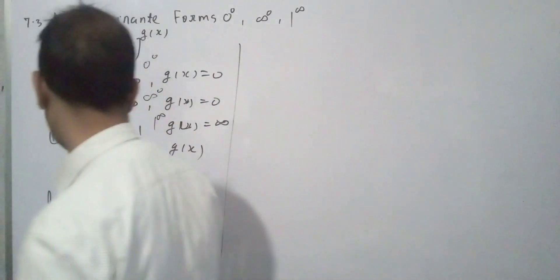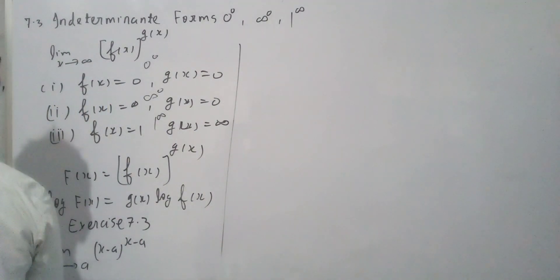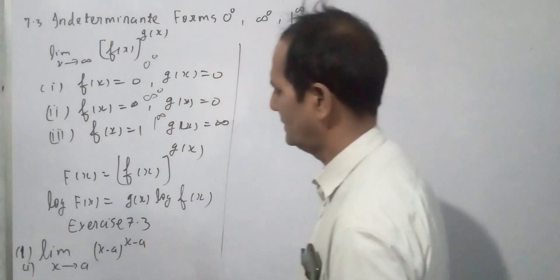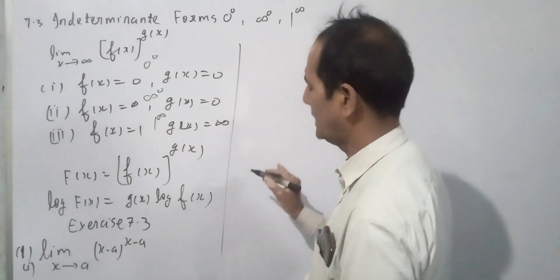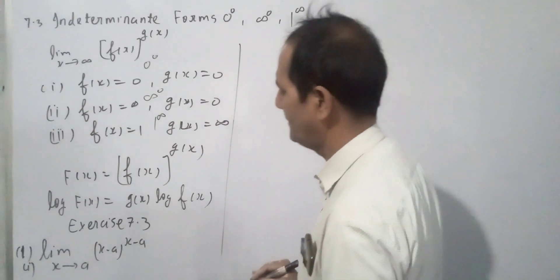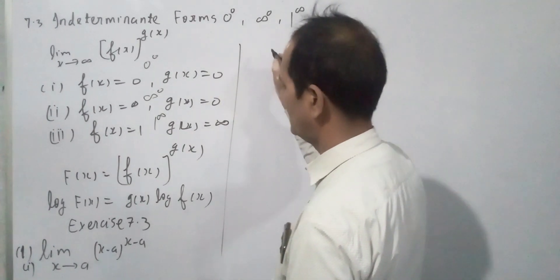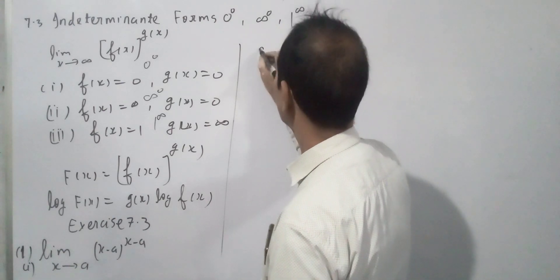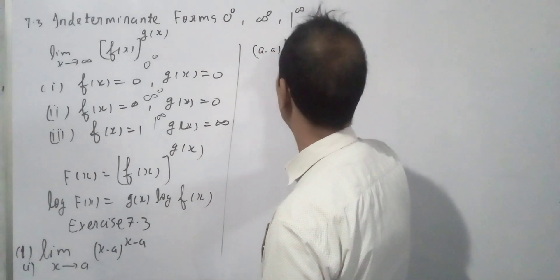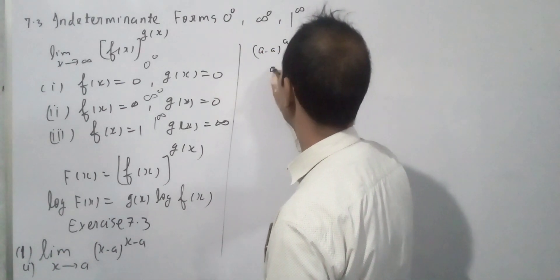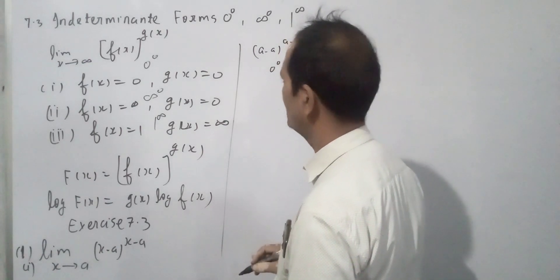First example: limit x tends to a of (x-a)^(x-a). This limit x tends to a, substituting a, we get 0^0, which is indeterminate.